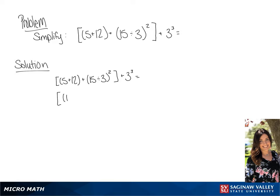So in the brackets we're going to get 17 plus 5 squared, and the 3 cubed is going to be simplified to 27. If we simplify the 5 squared in our brackets we're going to get 17 plus 25.